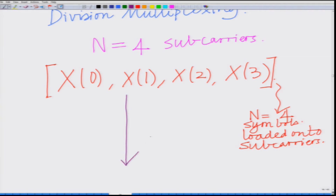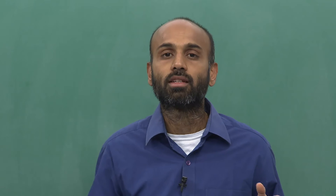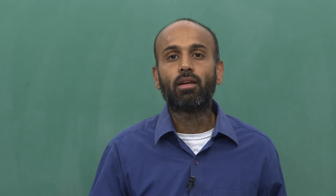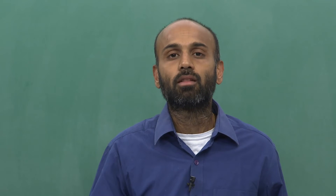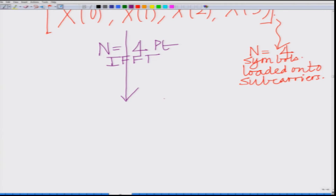We are looking at the N equal to 4 point IFFT — the inverse fast Fourier transform — of these symbols to generate the samples. So we are loading capital X0, X1, X2, X3 onto the subcarriers, which means we are taking the 4-point IFFT to generate the samples.